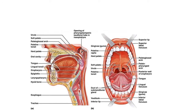The oral cavity proper is bounded anterolaterally by the teeth, gums, and alveolar processes. It has a roof superiorly formed by the hard palate and soft palate. Inferiorly, there is the tongue on the posterior side and the sublingual region below the tongue anteriorly. The oral cavity proper opens into the oropharynx through the oropharyngeal isthmus.